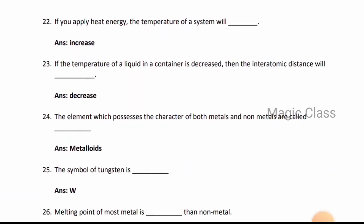Question 24: The element which possesses the character of both metals and non-metals is called metalloids. Question 25: The symbol of tungsten is W.